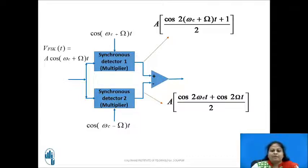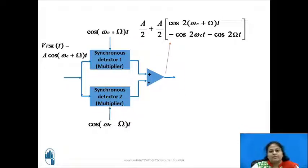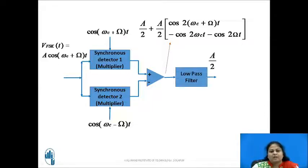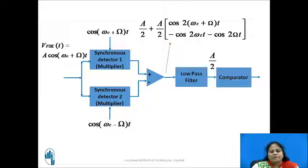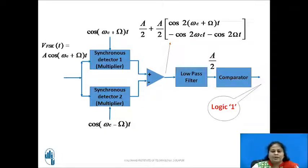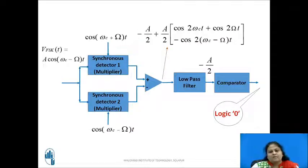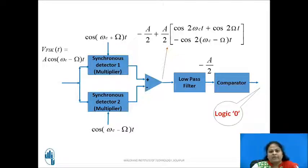These two products are further applied to the difference amplifier, which results in a signal consisting of a positive DC term A/2 along with some frequency components. This signal is then applied to a low pass filter whose output is only the DC component A/2, which is further fed to a comparator having a reference voltage set to 0 volts. As the input voltage A/2 is greater than the reference, the comparator output is logic 1. Similarly, during the bit slot when the FSK signal is A·cos(ωc − Ω)t, the low pass filter output produces a negative DC component −A/2, which gives comparator output logic 0. In this way, using synchronous detectors, the FSK signal is demodulated.